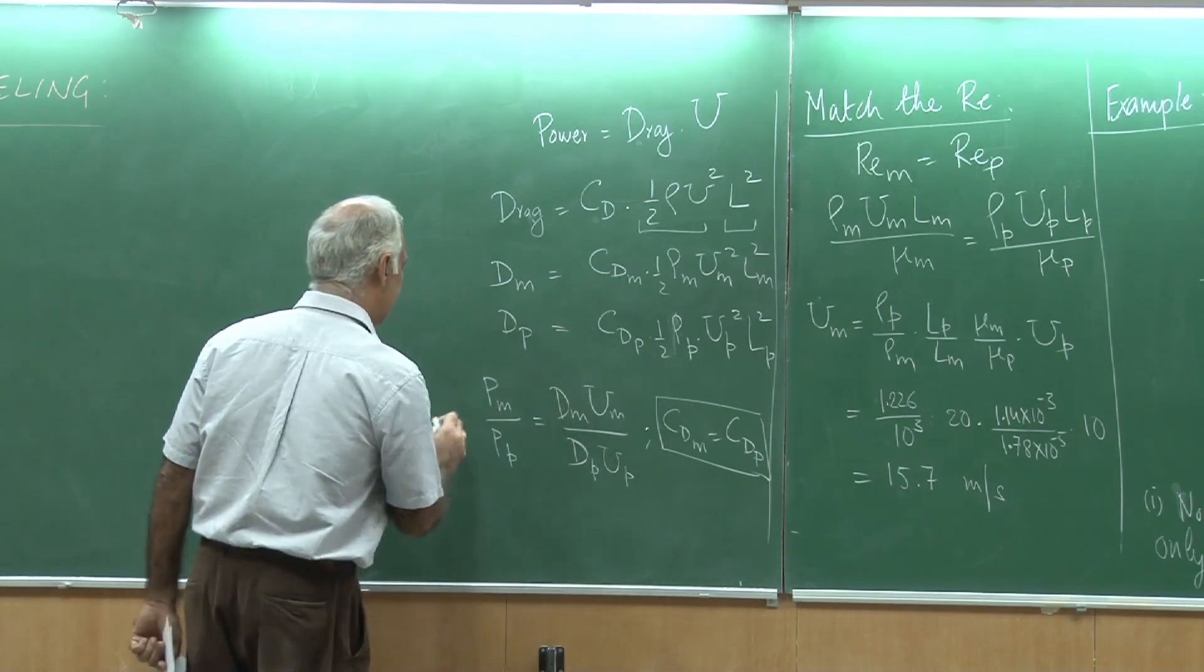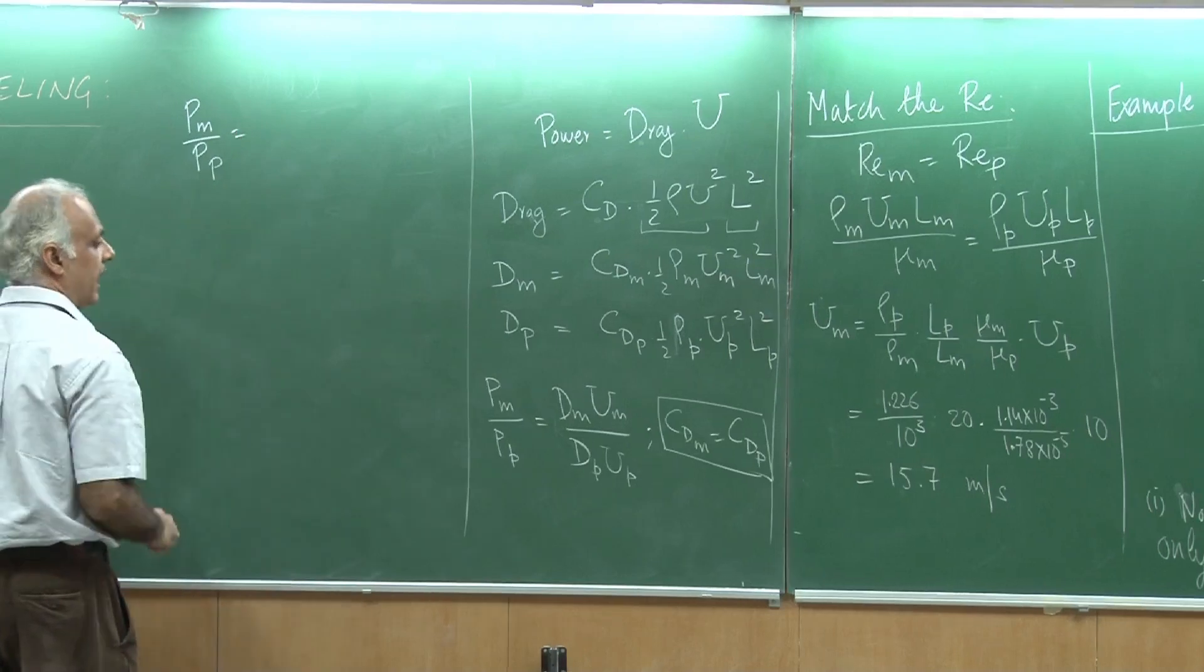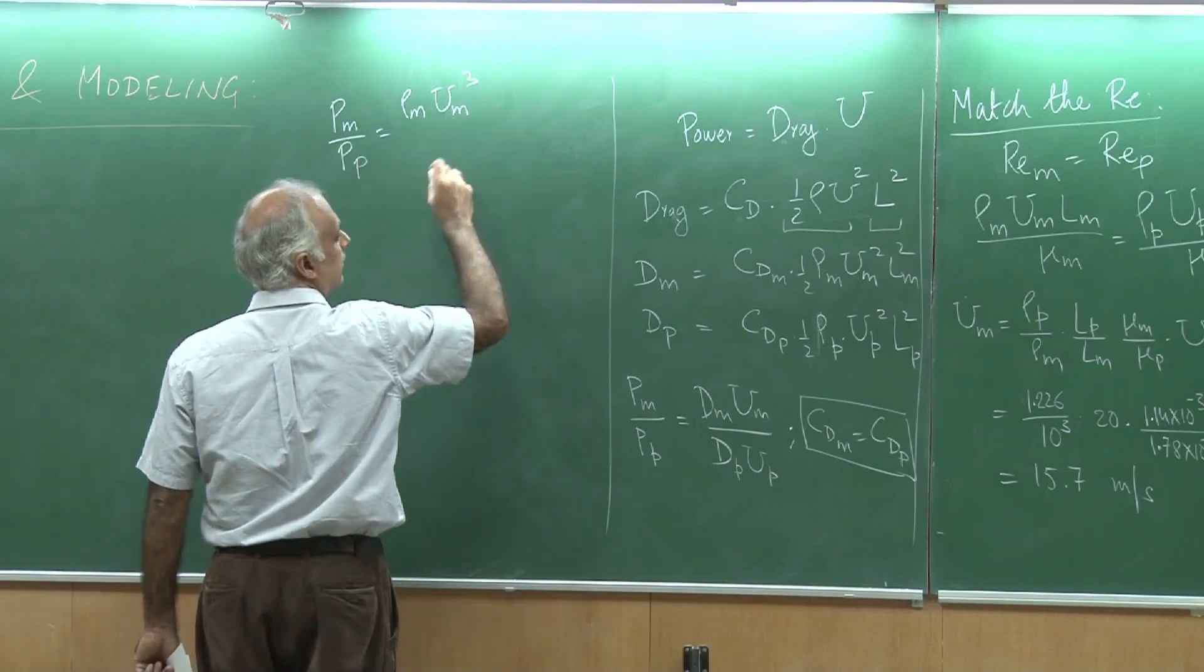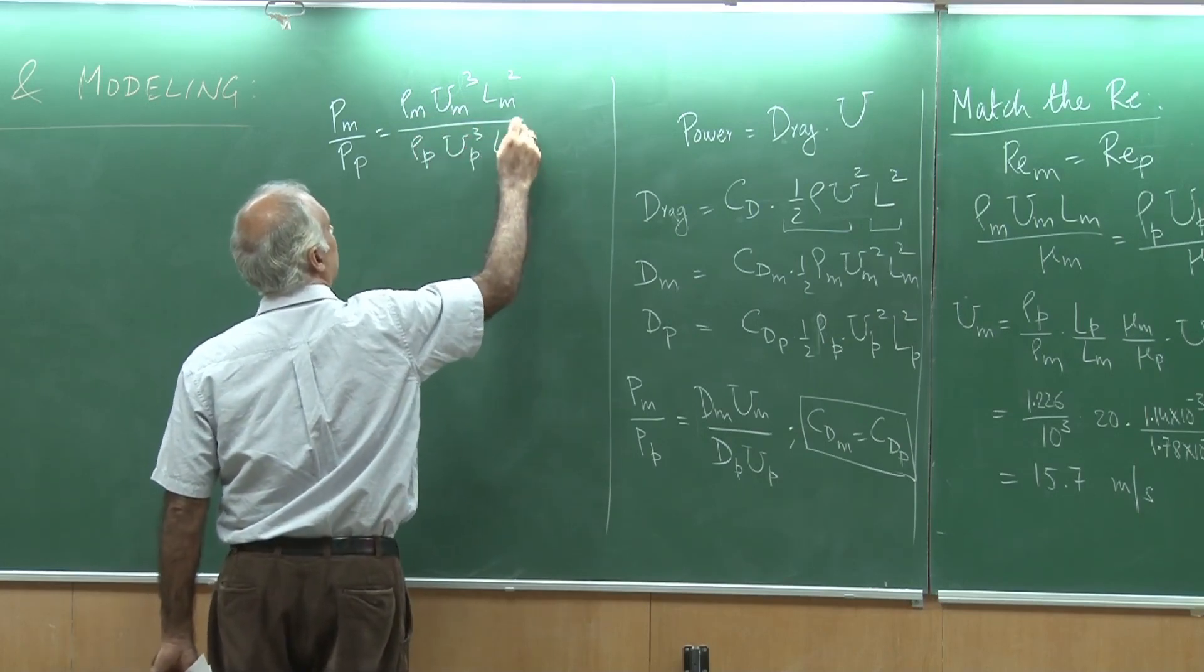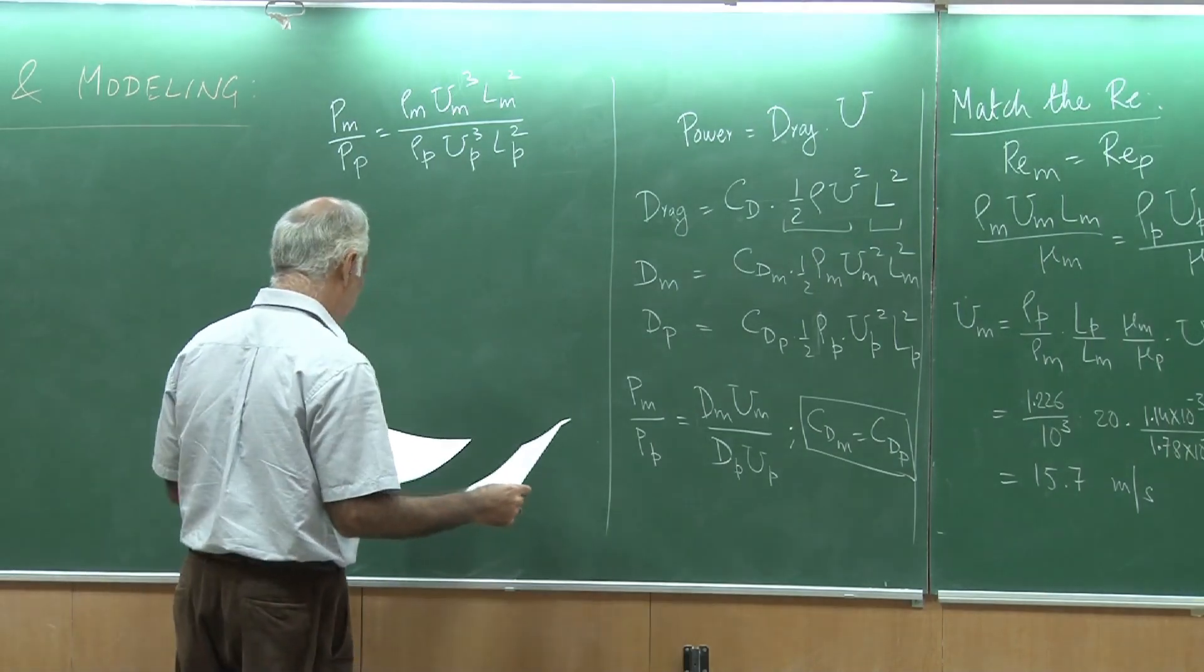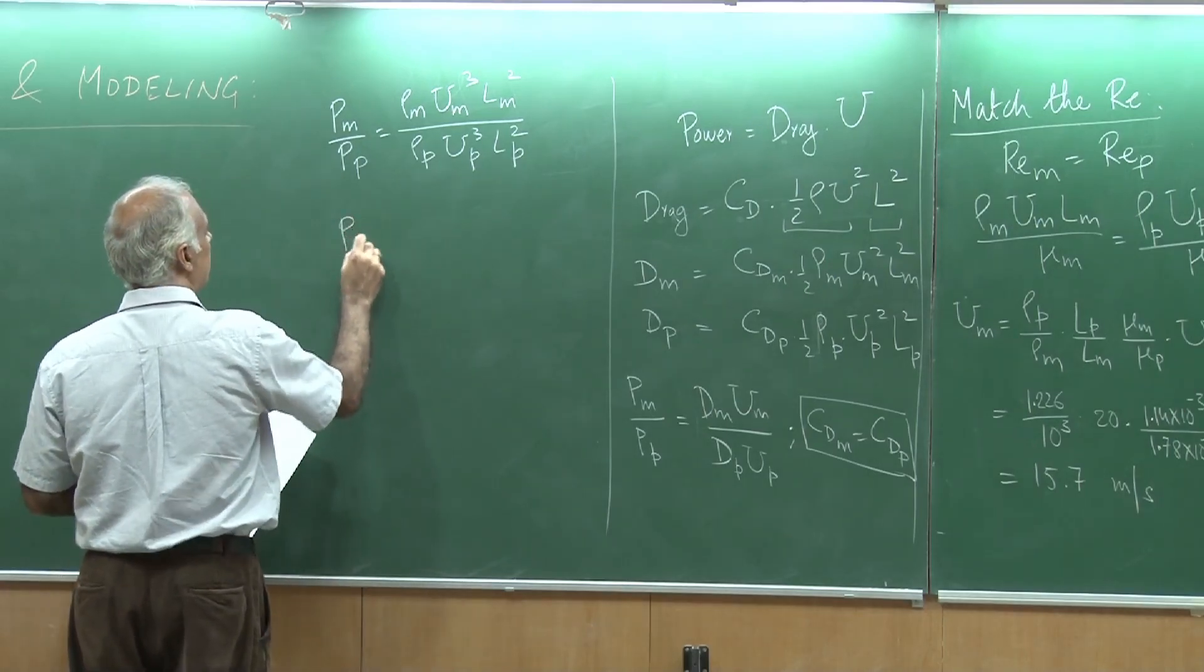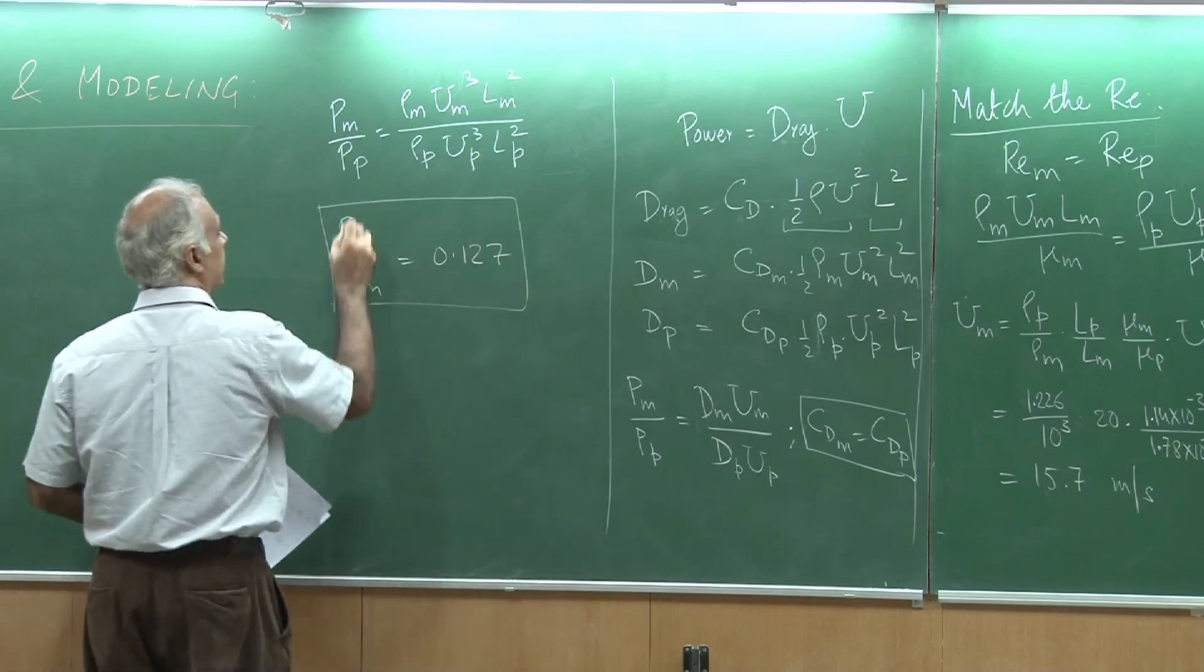If I plug these expressions over here, then this would imply that PM by PP would actually imply I can get rid of these and I would get ρm um³ Lm² divided by ρ prototype u prototype³ and L prototype². If I put in the values, then PP by PM would turn out to be 0.127 if I plug the values.